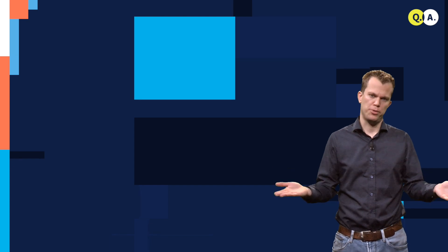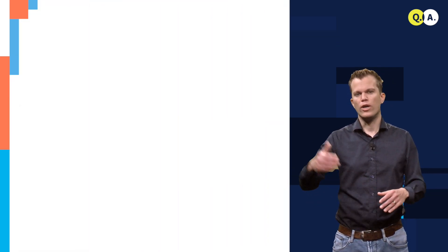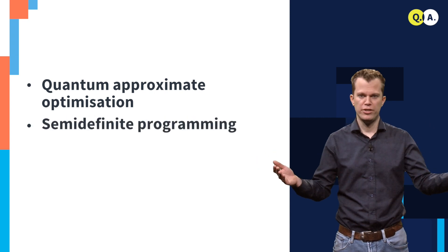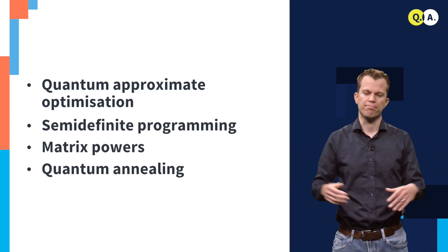There are many more possible applications in the area of optimization, to mention a few: quantum approximate optimization, semi-definite programming, matrix powers, and quantum annealing. All these applications have their own caveats, and they are all challenging. But if we can solve them, the impact can be enormous.